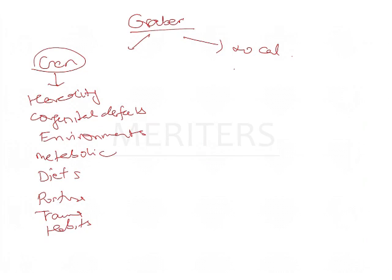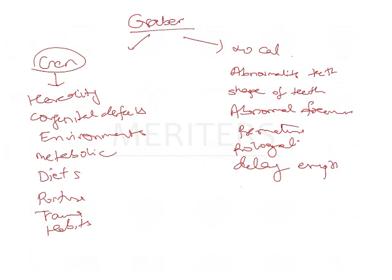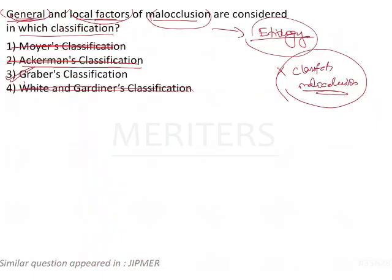The local factors in Graeber's classification consist of local changes that affect the dentition. These include abnormalities in teeth such as missing teeth, supernumerary teeth, or anomalies in tooth shape like mesiodens. Other local factors include abnormal frenum — which causes diastema formation — premature loss of teeth leading to arch-length discrepancy, prolonged retention causing impaction of succedaneous teeth, delayed eruption, abnormal eruptive path, and ankylosis. These are all local factors that can cause malocclusion, confirming Graeber's classification as the answer.